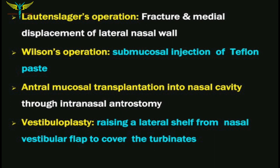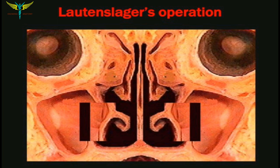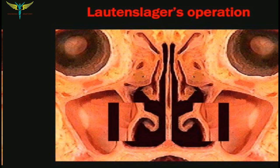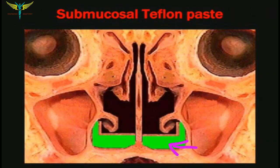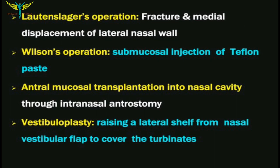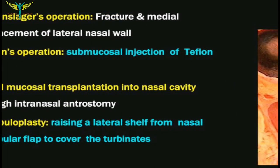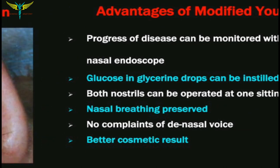Other operations include Lautenschläger's operation, Wilson's operation, antral mucosal transplantation into the nasal cavity, and vestibuloplasty. In Lautenschläger's operation, fracture of the maxillary walls is performed and the lateral nasal wall is displaced medially, reducing the roominess of the nasal cavity. In Wilson's operation, submucosal injection of Teflon paste is used. Antral mucosal transplantation is performed through intranasal antrostomy. Vestibuloplasty involves raising a lateral shelf from the nasal vestibular flap to cover the turbinates.